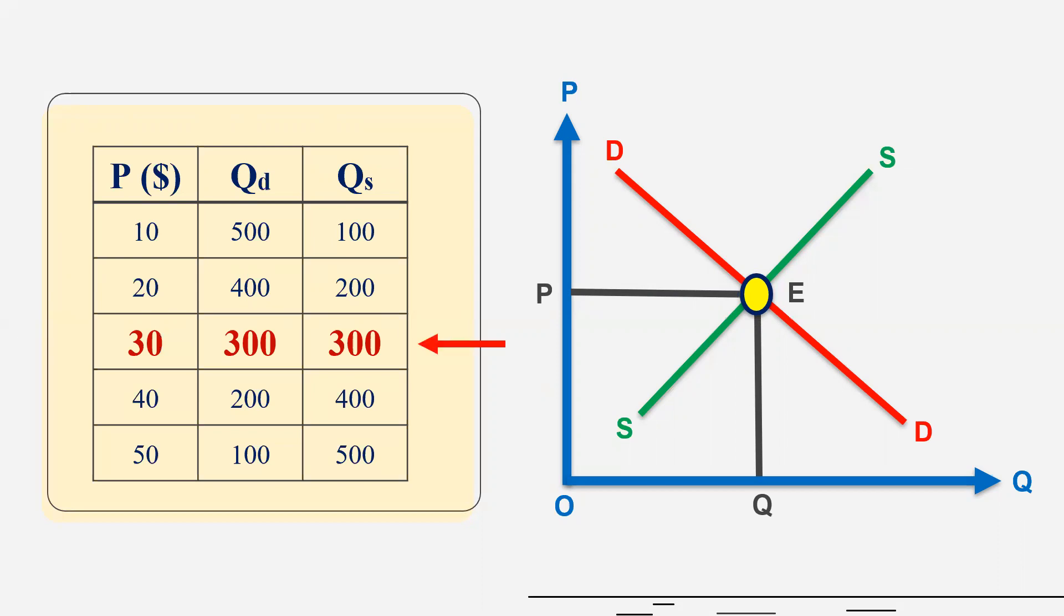So in the table, you can see $30 is equilibrium price because at this price quantity demanded and quantity supplied are equal. Now, if the market price is above the equilibrium price, you can see in the table, if market price is $40 or $50, we have the problem of excess supply.